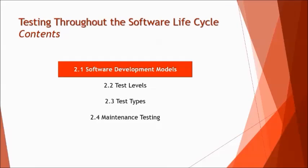The contents consist of four topics. First, software development models — we'll understand what they are and what variants are practiced today. Second, test levels — understanding the different levels like component testing, integration testing, system testing, and acceptance testing. Third, test types — covering white box testing, black box testing, and the difference between functional and non-functional. Fourth, maintenance testing — covering retesting, regression, impact analysis, and what the maintenance team does.